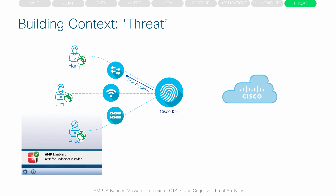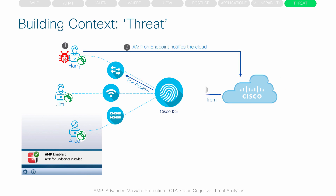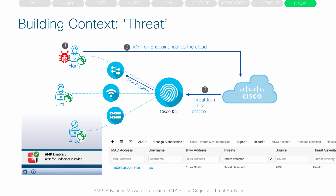ICE can also build threat context when integrated with AMP or CTA. With AMP, when an endpoint installed with AMP gets infected, it reports the incident to the AMP cloud. ICE subscribes to this event via STIX and TAXII, and then the threat score shows up in the ICE dashboard. The administrator can then opt to quarantine the user's device.